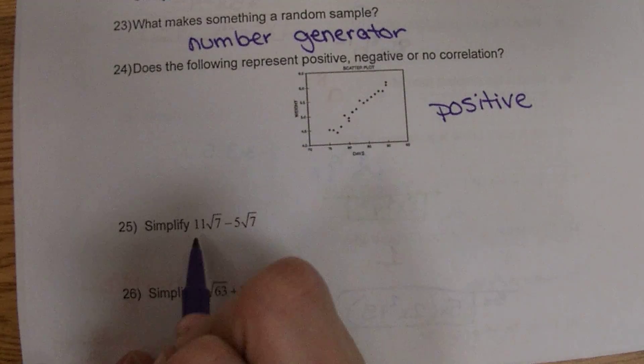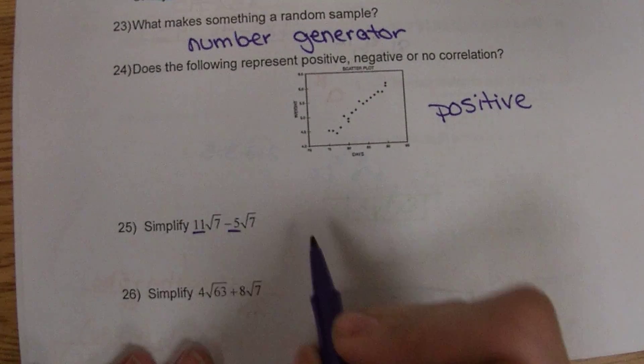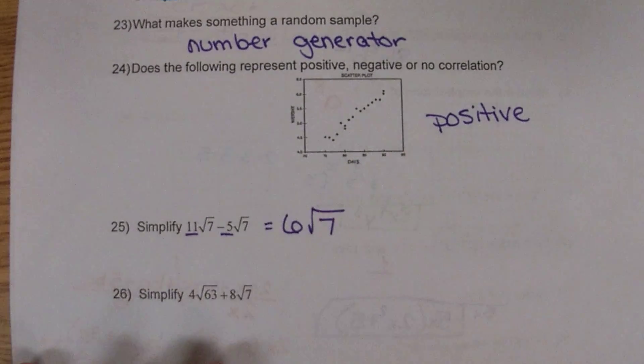25, square roots already match, so we're just going to subtract the coefficients in front and we'll get 6 square root 7.